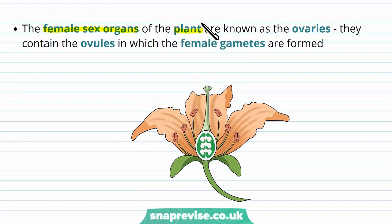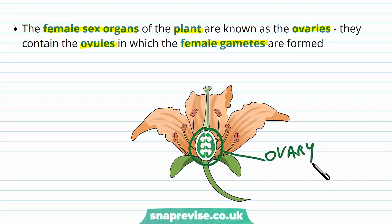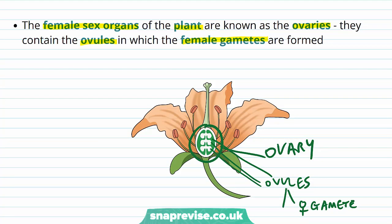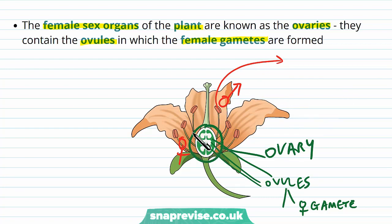The female sex organs of the plant are known as the ovaries, and the ovaries contain ovules in which the female gametes are found. Looking at the plant, this structure here is what's known as the ovary, and inside the ovary we have multiple ovules, and inside those are the female gametes. The female gametes in the ovules will eventually need to fuse with the pollen gametes from the males. What you'll notice with plants, which is different to animals, is that the male and female organs can exist on the same plant — the pollen will go to the female organ of another plant, but every plant does have both male and female sex organs.